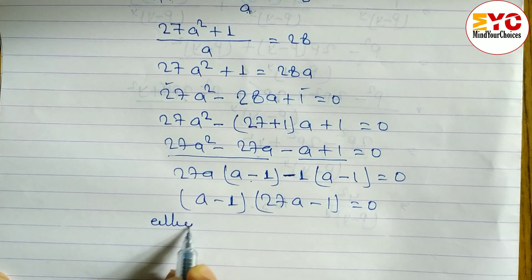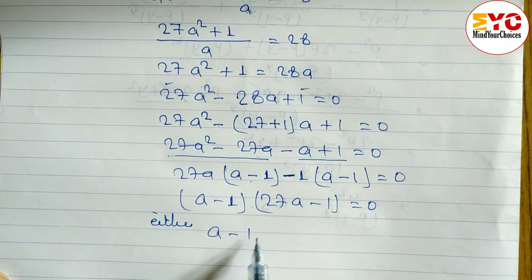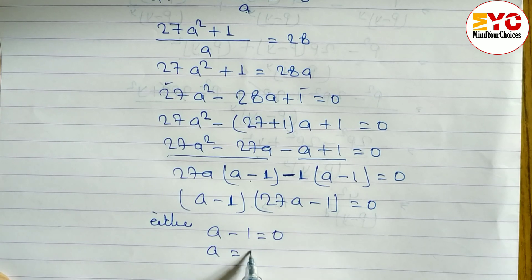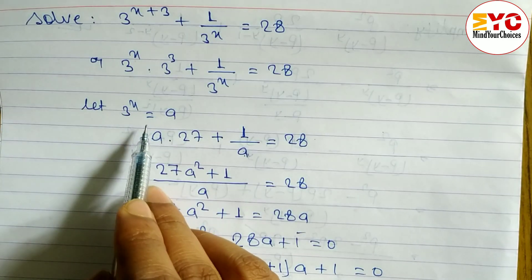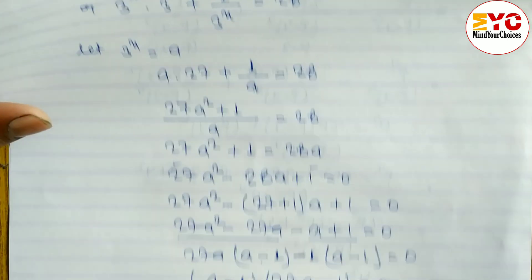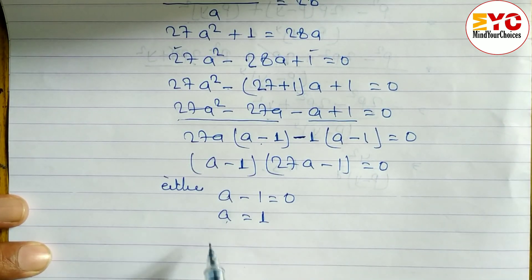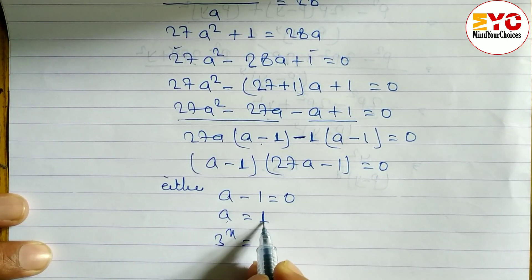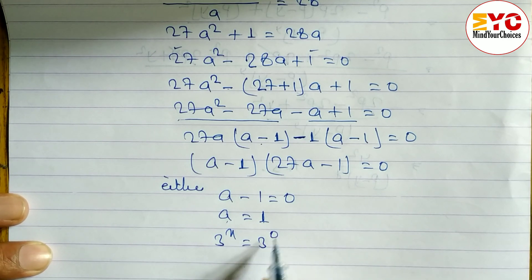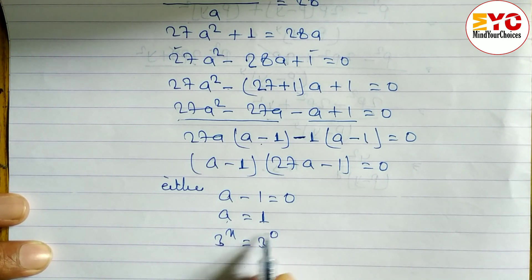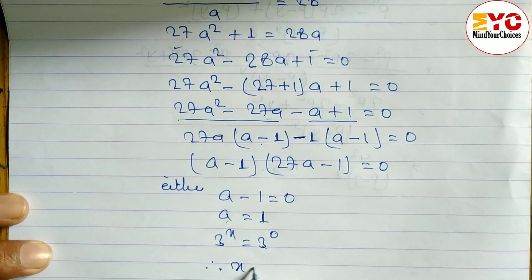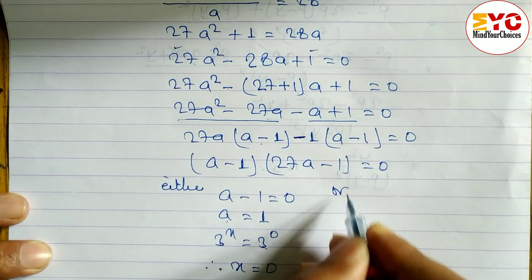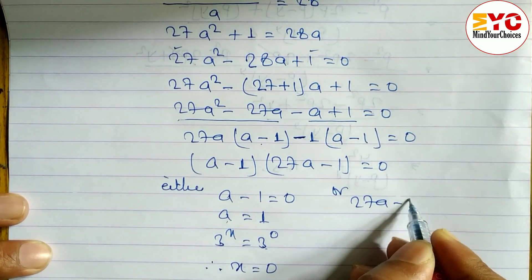Now either a minus 1 is equal to 0, giving a is equal to 1. Since we let a equal to 3 power x, we write 3 power x is equal to 1, which means 3 power x is equal to 3 power 0 — because we need to make the base the same so the powers can be equated. Therefore x is equal to 0.